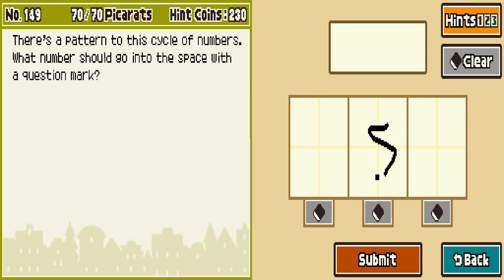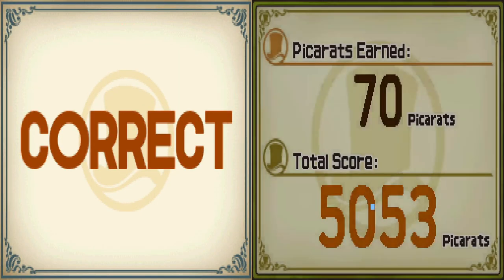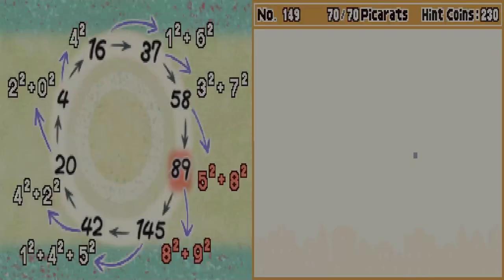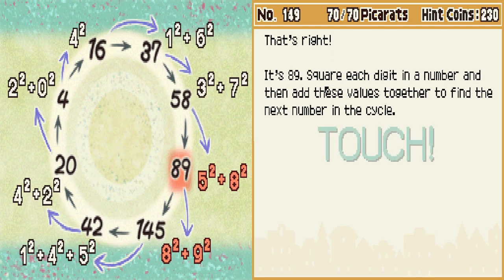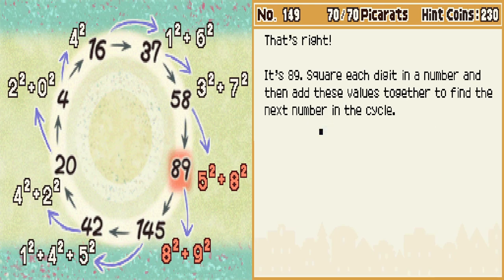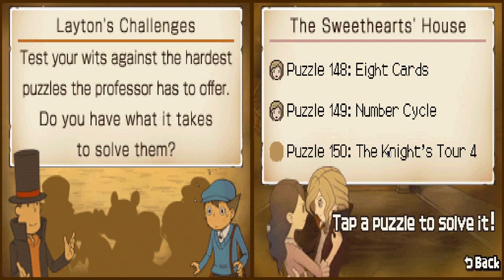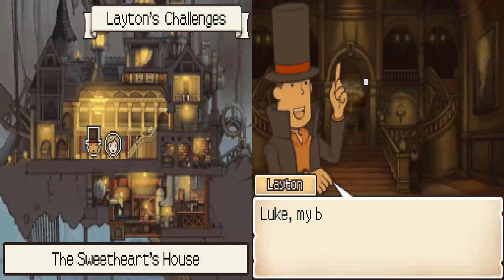There was no way I was getting this. It's 89. Want to know why it's 89? Here's why I would have never gotten this on my own: square each digit in a number and then add the values together. No one was thinking to do that! Square each digit? In what realm is that where your brain goes? That's not challenging. That's not clever in any way. That's just stupid. And now I gotta do another one of these.